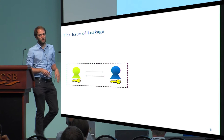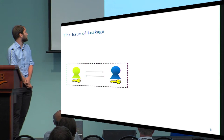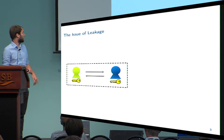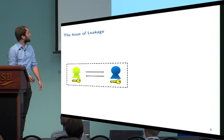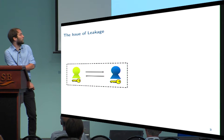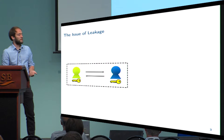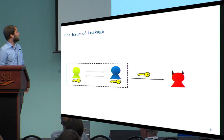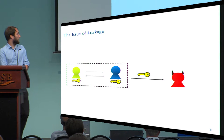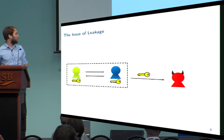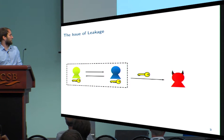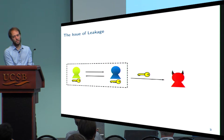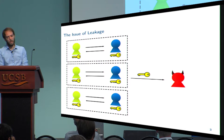In this talk, I want to consider the symmetric setting. We have two parties that share some secret key and run some cryptographic protocol. There are many settings where leakage is really an issue, such as side channels — for example, the smart card or RFID setting. An adversary, even though the protocol might be secure, might exploit some side channels and learn some partial information about the secret key.